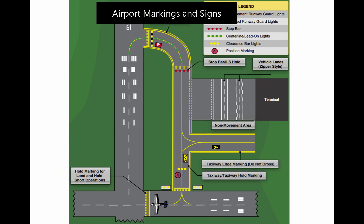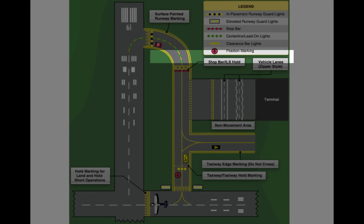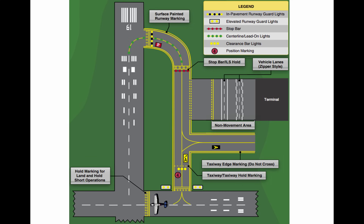There are markings and signs used at airports which provide directions and assist pilots in airport operations. Some of the most common markings and signs are discussed. Additional information may be found in Chapter 2, Aeronautical Lighting and Other Airport Visual Aids in the Aeronautical Information Manual. Runway markings vary depending on the type of operations conducted at the airport. This figure shows a runway approved as a Precision Instrument Approach Runway and some other common runway markings. A basic VFR runway may only have centerline markings and runway numbers.